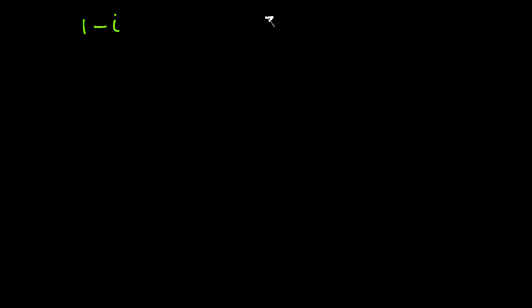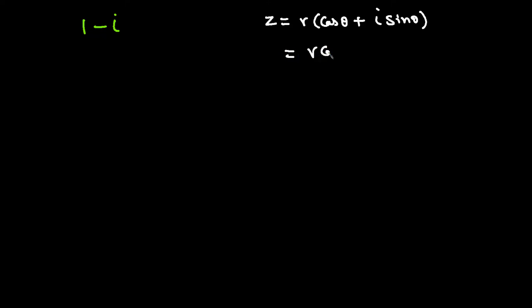First example: we have 1 minus iota. We're going to convert this into polar form. The polar form is Z equals R(cosine theta plus iota sine theta), which we can expand as R cosine theta plus R sine theta times iota. Comparing with 1 minus iota, the real part is 1, so R cosine theta equals 1.